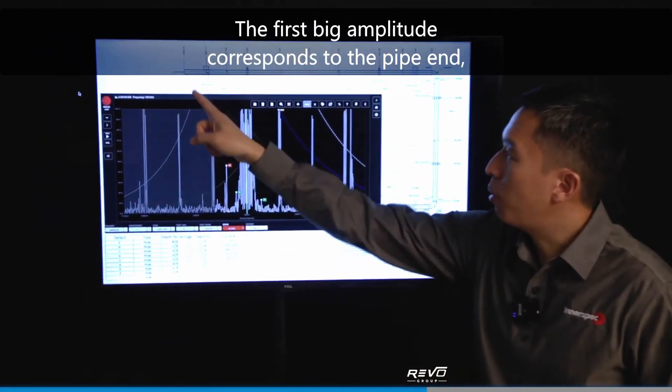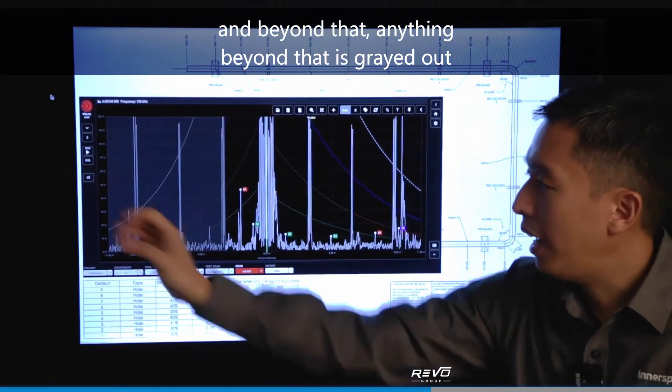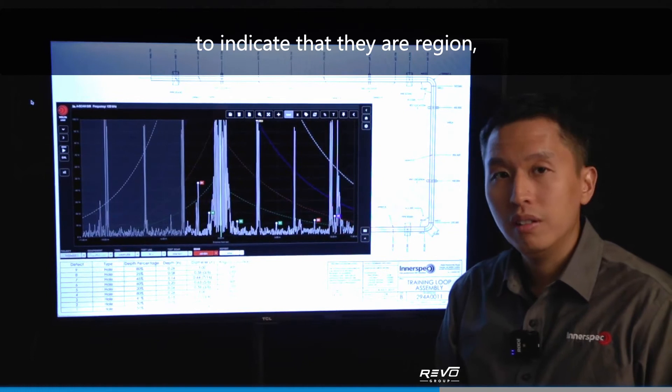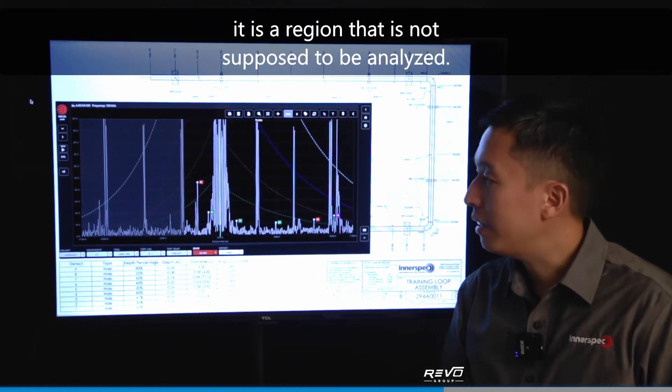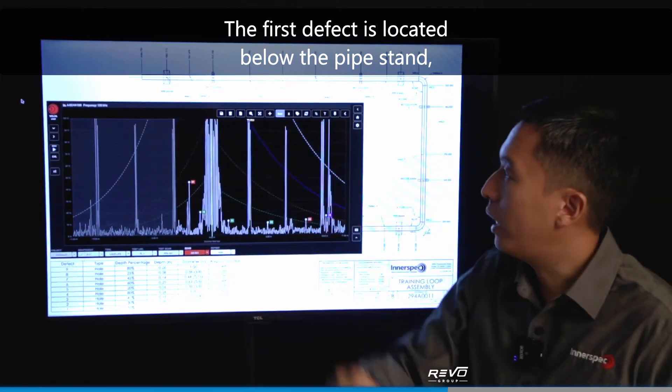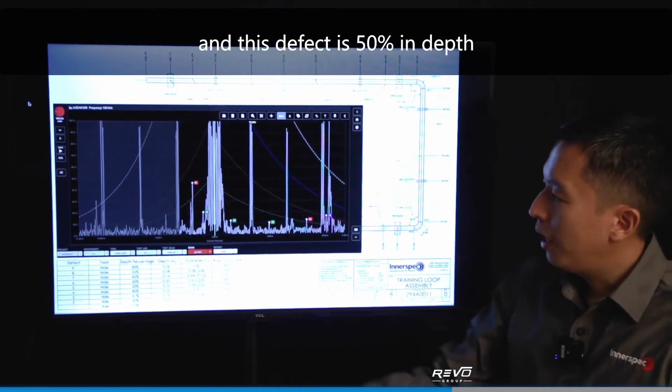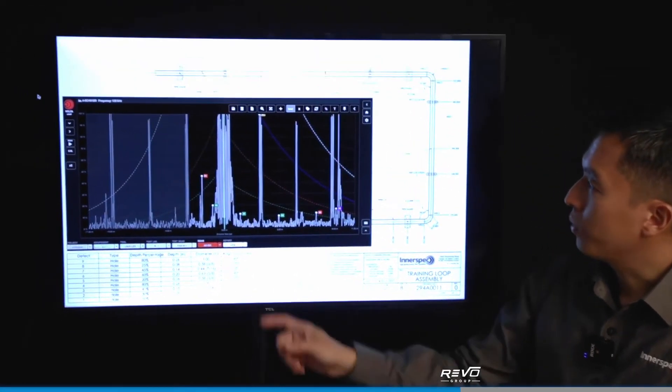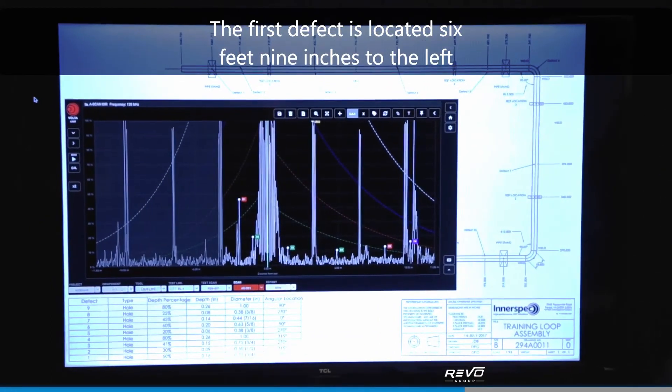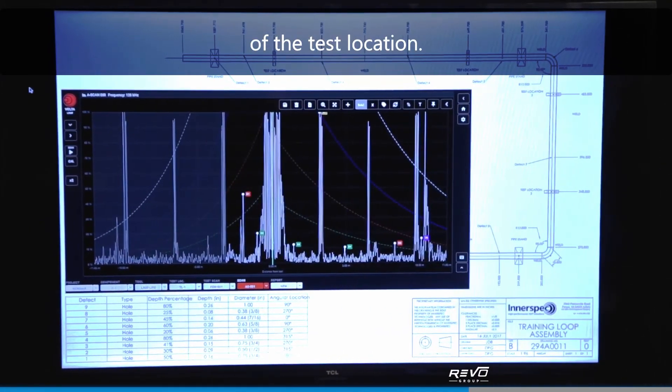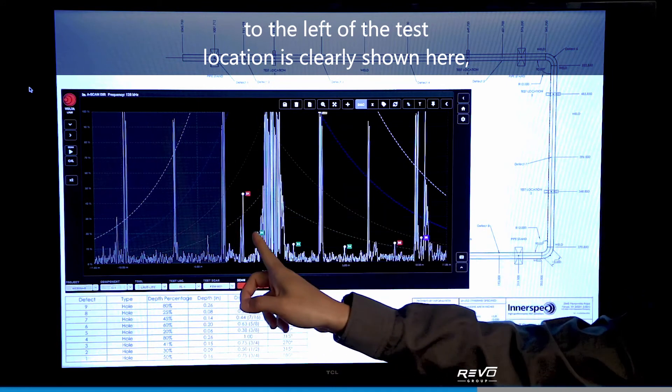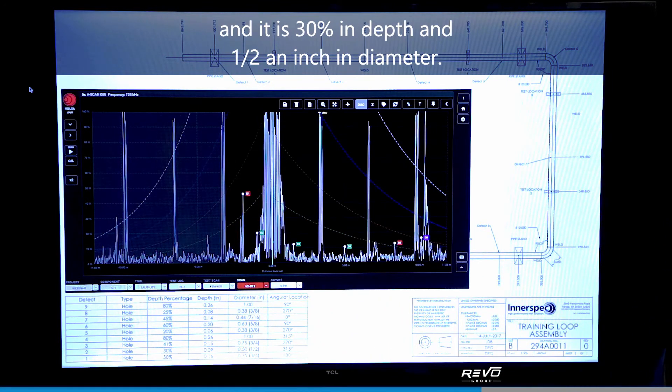The first big amplitude corresponds to the pipe end, and beyond that, anything beyond that is different. The first defect is located at the test location and it is 30% in depth and half an inch in diameter.